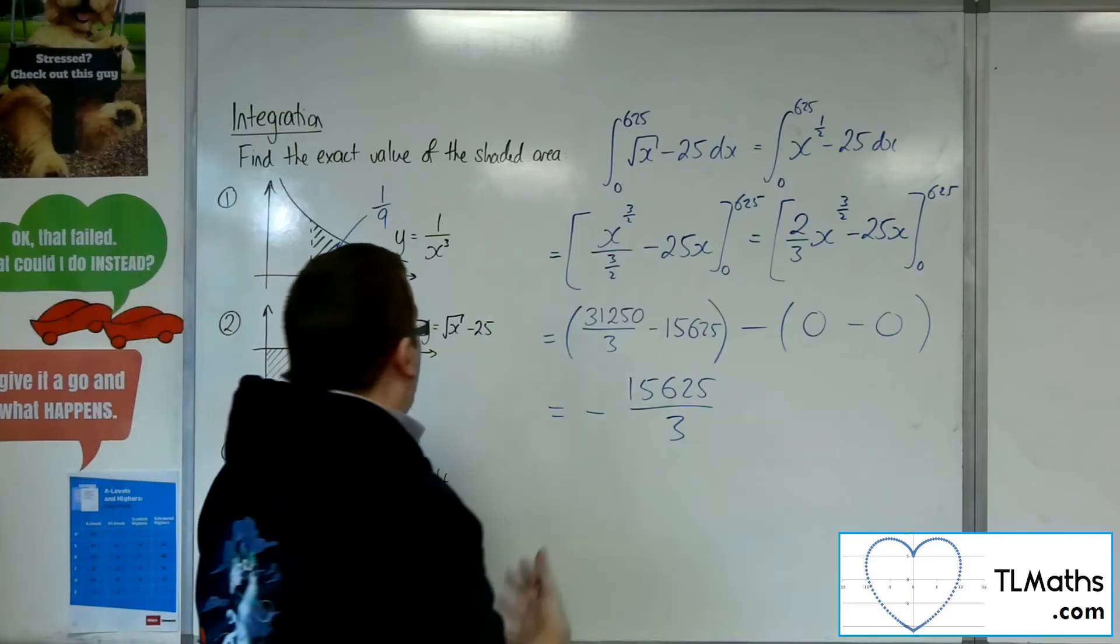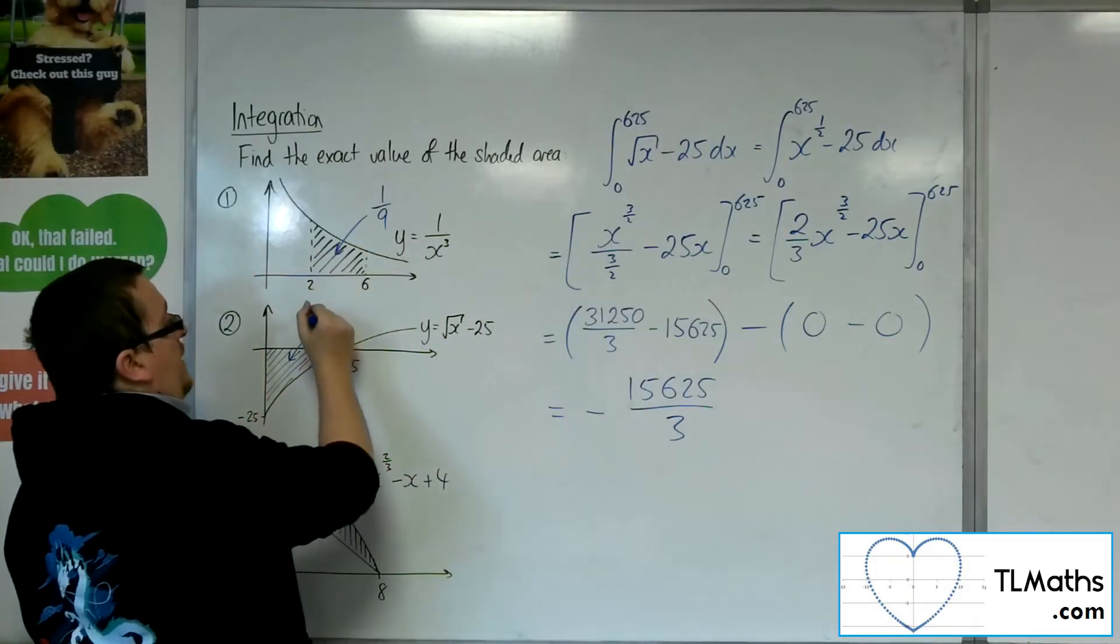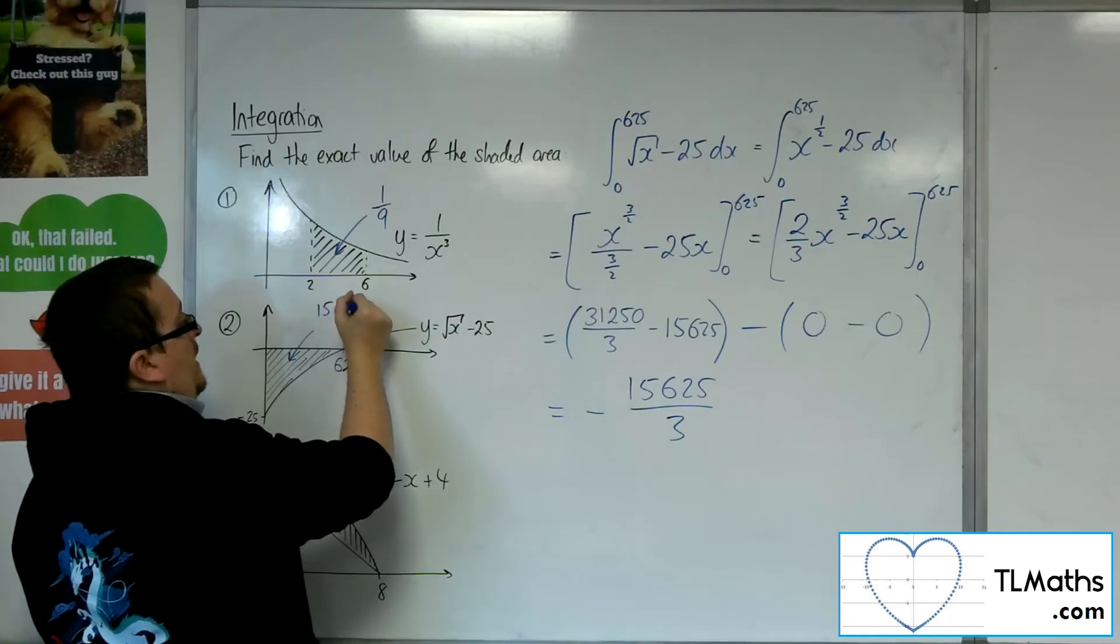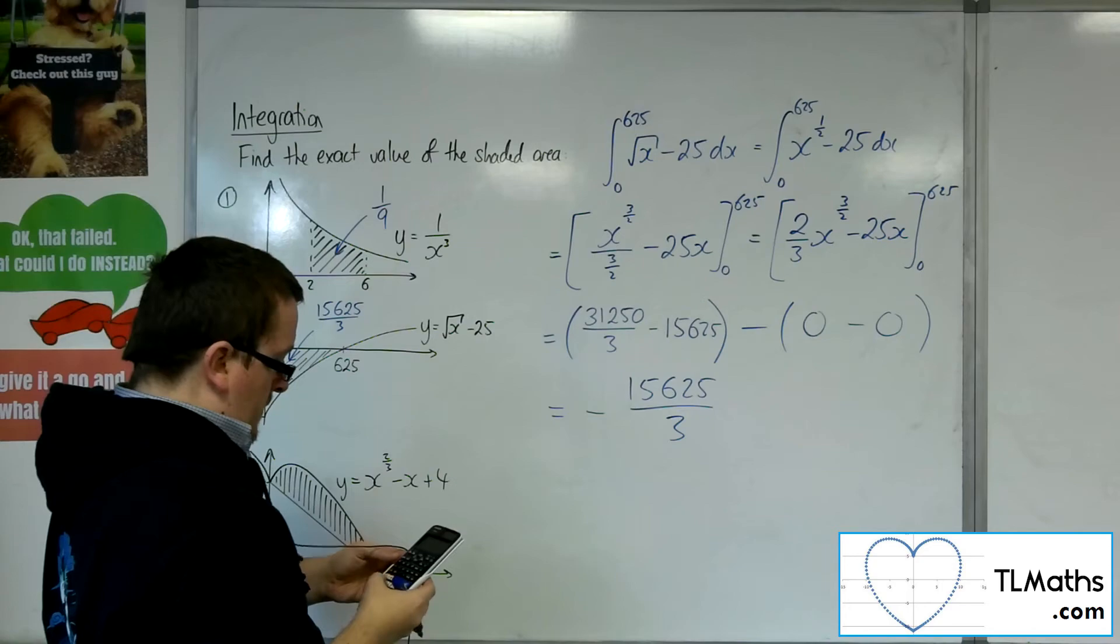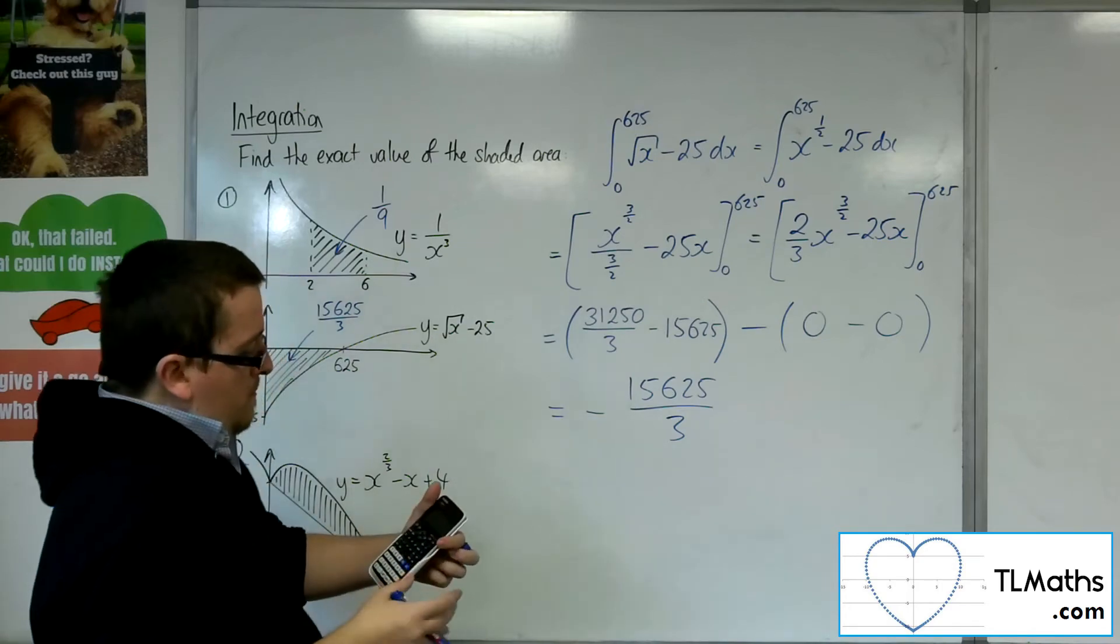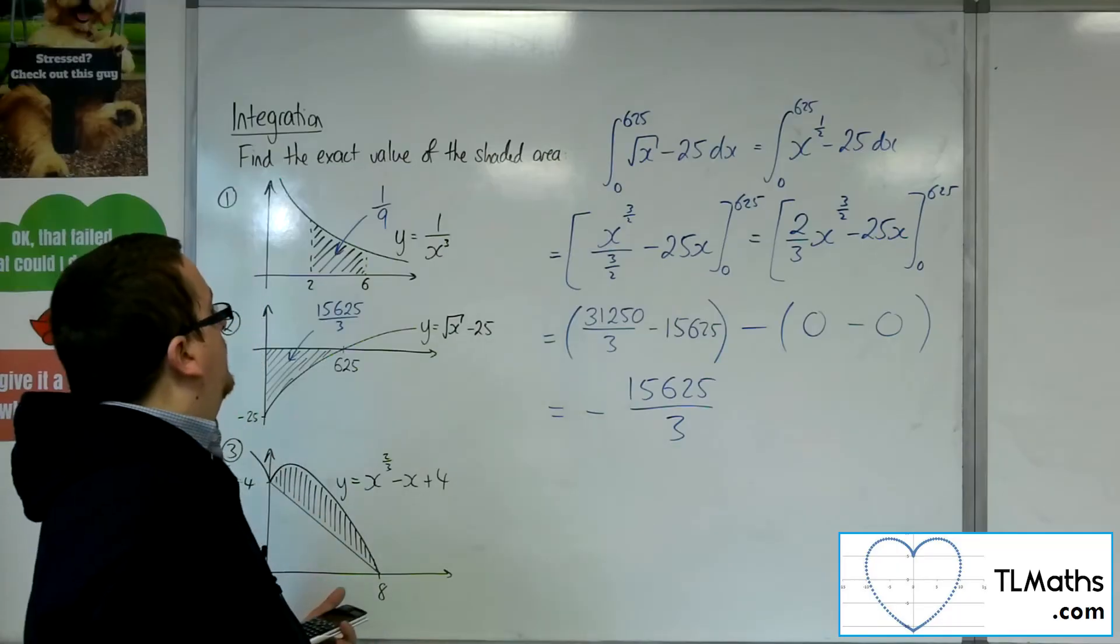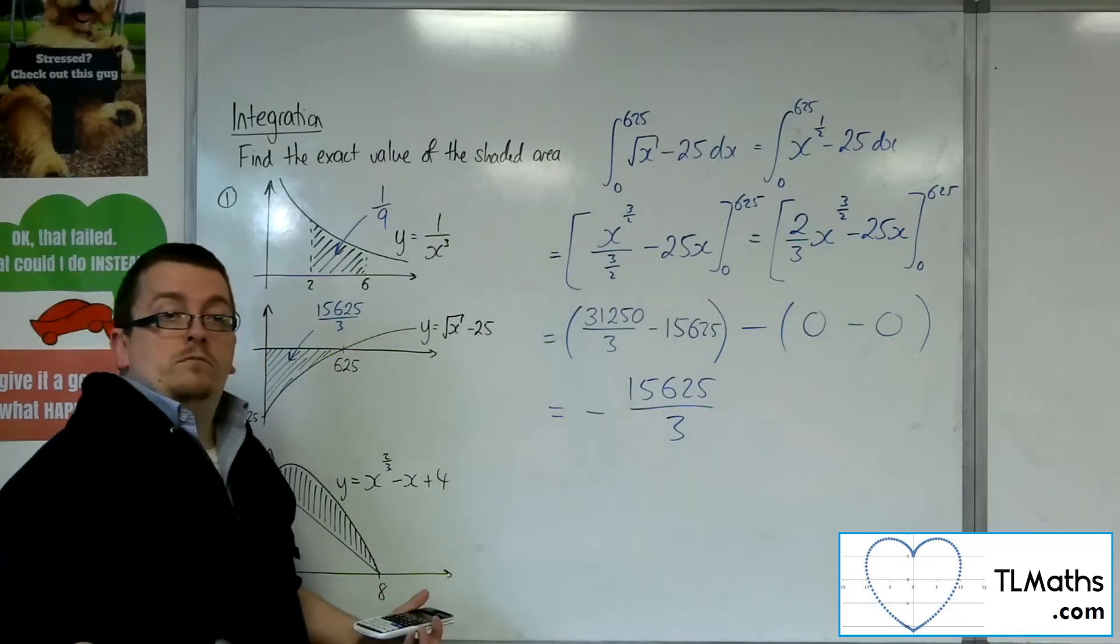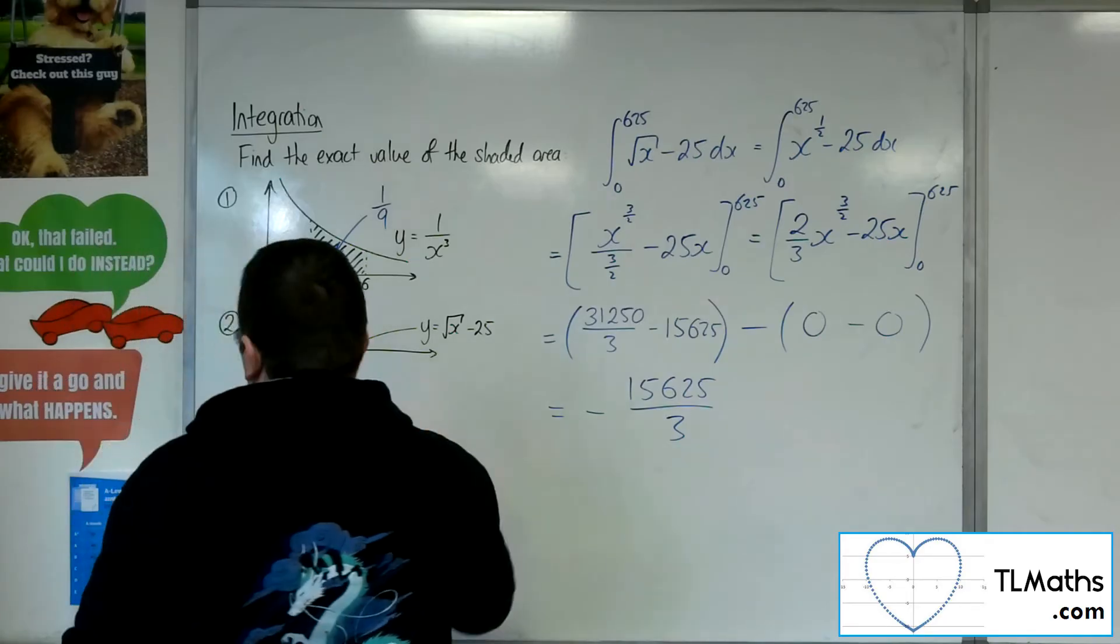So the actual area that I want is the positive of that, so 15,625 divided by 3, which is 1,736 to the nearest integer. So that's number 2.